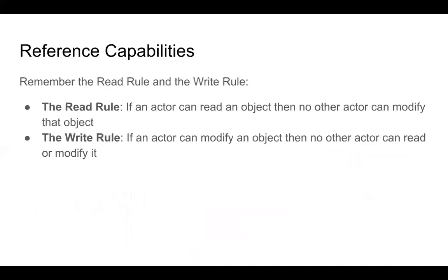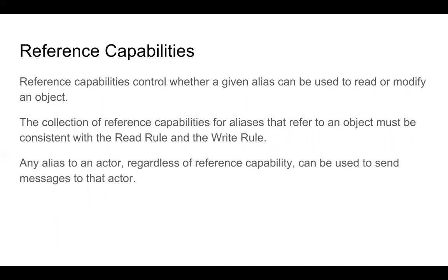Let's talk about reference capabilities. The important things to remember are the read rule and the write rule. The read rule: if an actor can read an object, no other actor can modify that object. The write rule: if an actor can modify an object, then no other actor can read or modify it. Reference capabilities control whether a given alias can be used to read or modify an object. An alias is a name you've given to something — think of it as a variable.